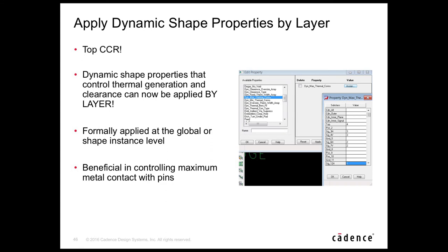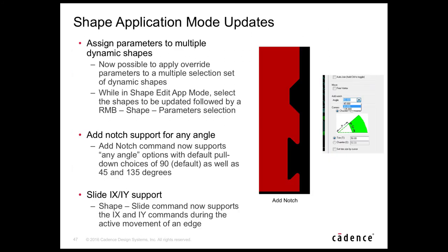Dynamic shape properties can now be applied by layer — for example, controlling thermal reliefs on a per-layer basis. Using Edit Property with any property beginning with 'dyn', a grid appears with properties and layers. Instance layer controls allow working at the layer instance level to control thermals. No DRCs are currently in place for this feature, but user feedback is welcomed.